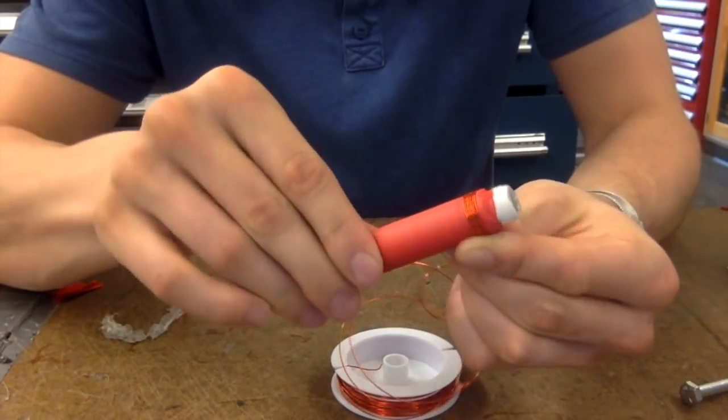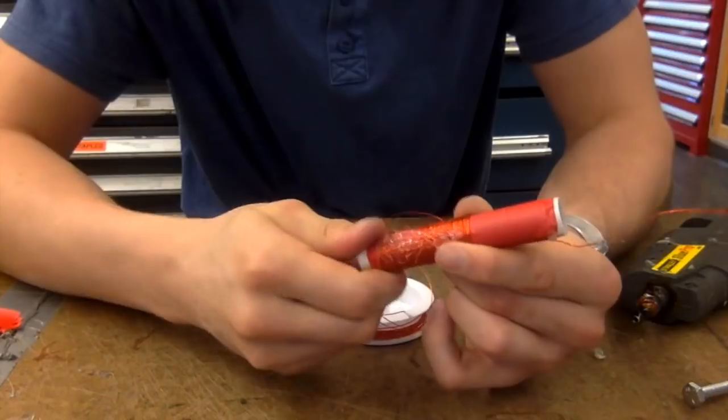Now I'm coiling the wire back up the length of the marker to increase the strength of the magnetic field created by the solenoid.